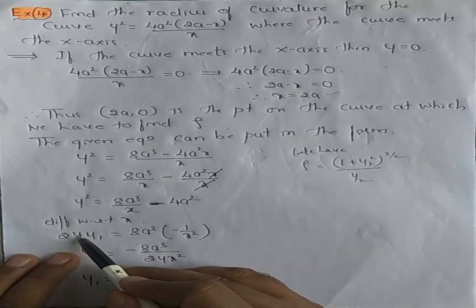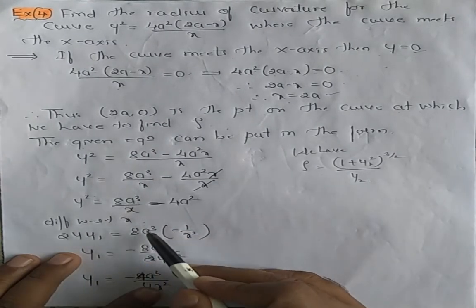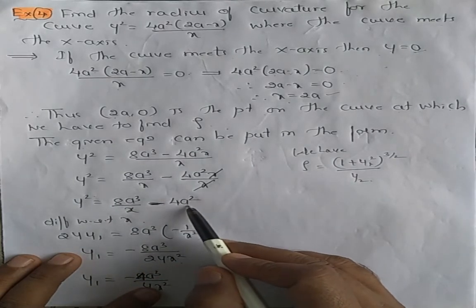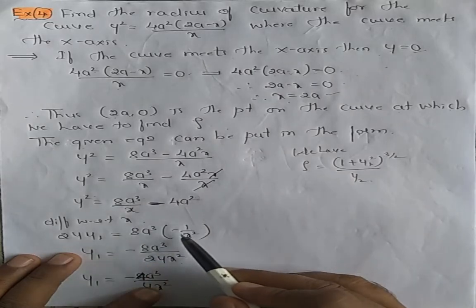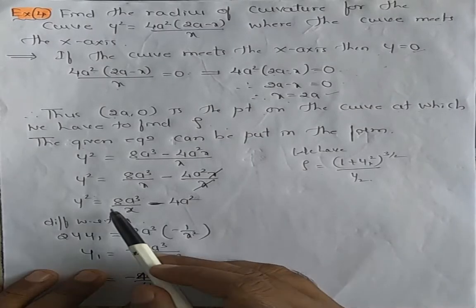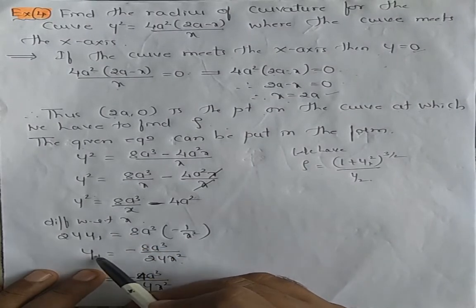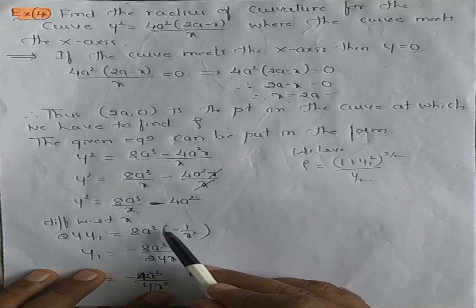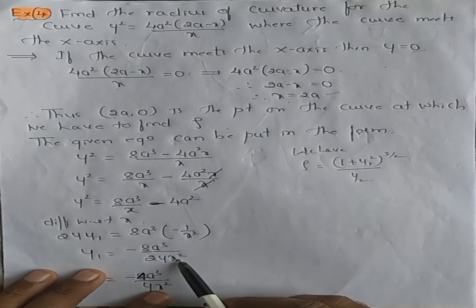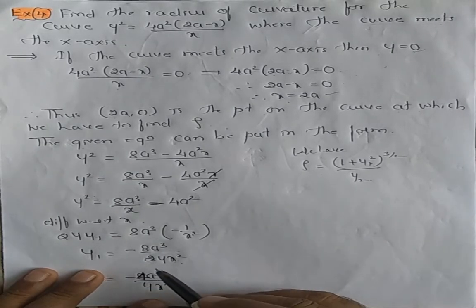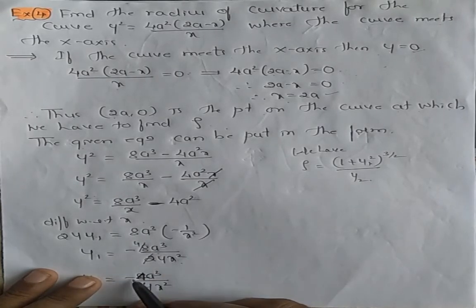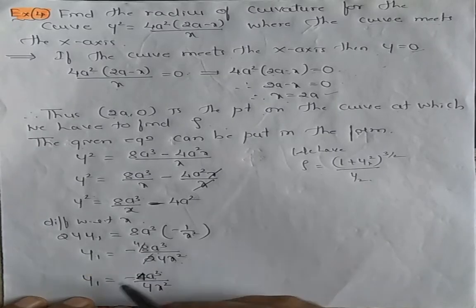Differentiating y² = 8a³/x − 4a² with respect to x: 2y·y₁ = 8a³·(−1/x²). The constant −4a² differentiates to 0. Solving for y₁ gives y₁ = −4a³ / (y·x²).